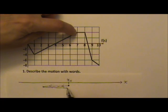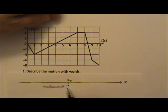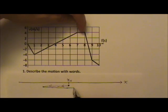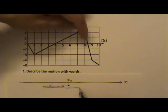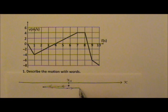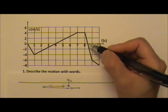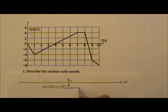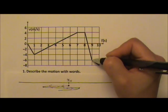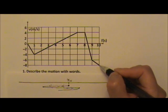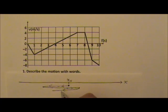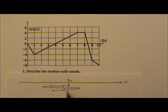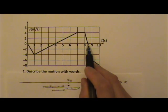It travels in the positive x direction and gets to constant speed — stops accelerating but keeps going in the positive direction. Then it slows down momentarily, getting to 0 meters per second and ready to turn around. So it switches to the negative x direction, speeds up, and then continues to speed up at a slower rate. The turning points are at 4 and 8.4 seconds, where velocity equals zero.